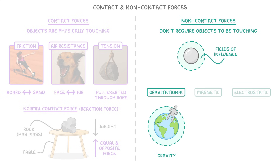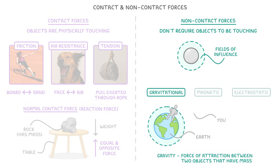For example, gravity is a force of attraction between any two objects that have mass, like the Earth and you or me. But importantly, we'd still feel this force of attraction even if we weren't touching the Earth.